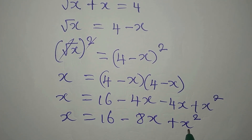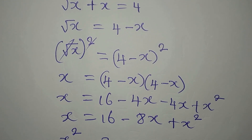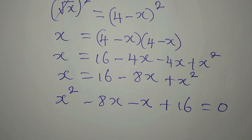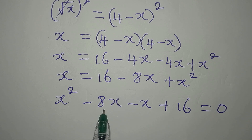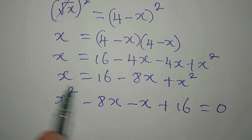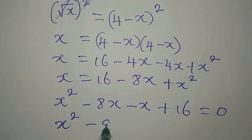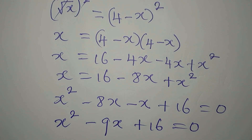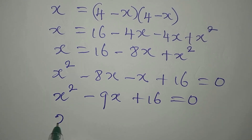Now let's rearrange. We have x squared, minus 8x, then minus x, and plus 16, all equal to zero. So x squared minus 9x plus 16 equals zero. This is now a quadratic equation.